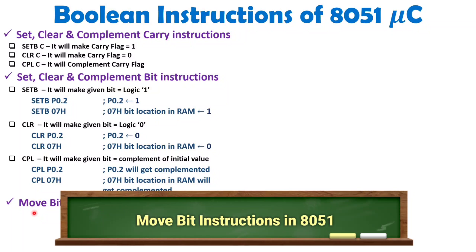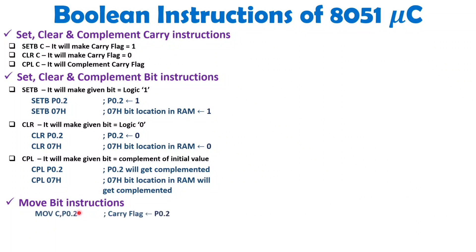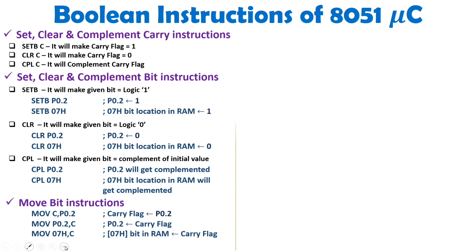Now I will explain how to use the MOV instruction for a single bit. When you write MOV C, P0.2, the port bit P0.2 is moved into the carry. When you write MOV P0.2, C, the carry is moved into that port pin. When you write MOV 07h, C, the carry is moved into the bit address inside internal RAM. This MOV operation always happens with respect to the carry flag.